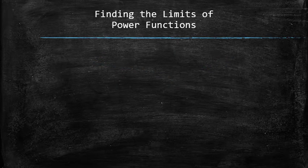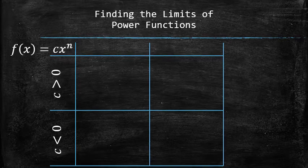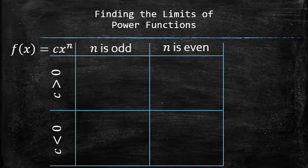What makes power functions nice is that there are only four possible behaviors, depending on the sign of the coefficient and whether the degree is even or odd. You can follow the link in the description of the video to figure out the four patterns for yourself, but here's the summary of them.